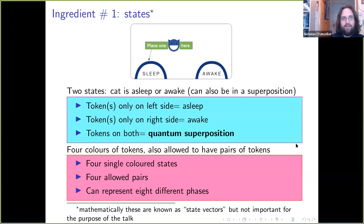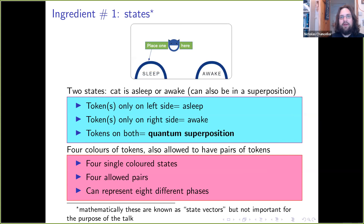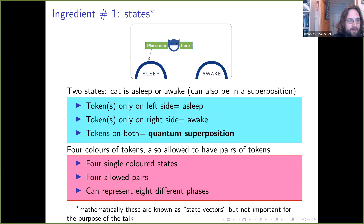The first ingredient: states. We're looking at a simple system — one system that has two possibilities. A cat: it's either asleep or awake. We chose asleep or awake rather than alive or dead because this is with kids. We can have tokens on the left or right side to correspond to asleep or awake. Because it's quantum mechanical, you have a superposition — some likelihood of being asleep, some likelihood of being awake. We have four colors of tokens, and also allow some pairs of those colors to represent eight different phases, which determine whether they add or subtract.